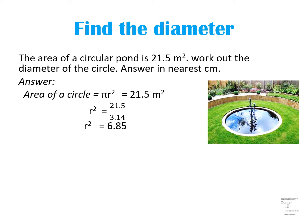r square is equal to 6.85 — when we divide 21.5 by 3.14, we get 6.85. This is r square. After this, we have to find the r value. We have r square, so how to find r? We have to take the square root. The square root of r square is r, so r is equal to the square root of 6.85. The square root of 6.85 is 2.62 meters. The value of r is 2.62 meters.